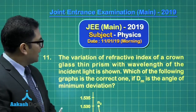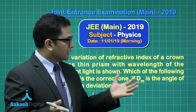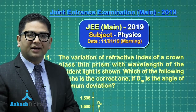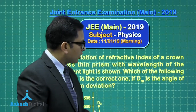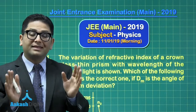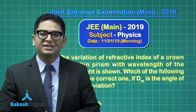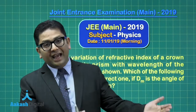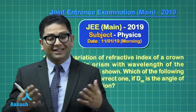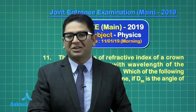Question 11 says the variation of refractive index of a crown glass — crown is simply a material — with wavelength has been given. From that, we need to plot the variation of minimum deviation of the given setup. One key thing given is that the prism is thin, which means we can use an oversimplified expression — that's an advantage deliberately given to simplify the calculation.